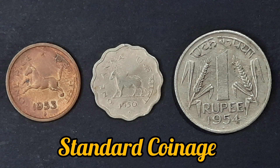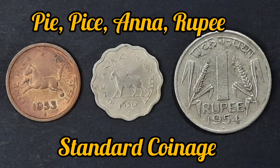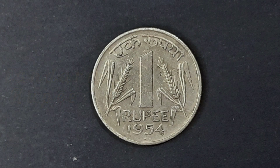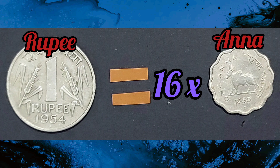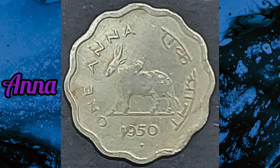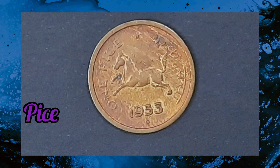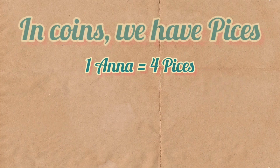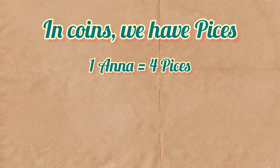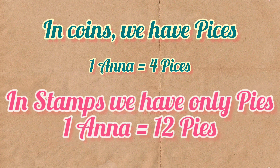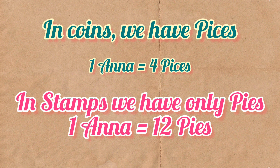In the standard coinage system, the rupee is further divided into annas, pice, and pies. One standard rupee is equivalent to 16 annas, and one anna is equal to four pice. One pice is equal to three pies. Interestingly, in the coinage system after anna we have pice and pies, but in postage stamps after anna we have only pies — there are no pice. That is the key difference.